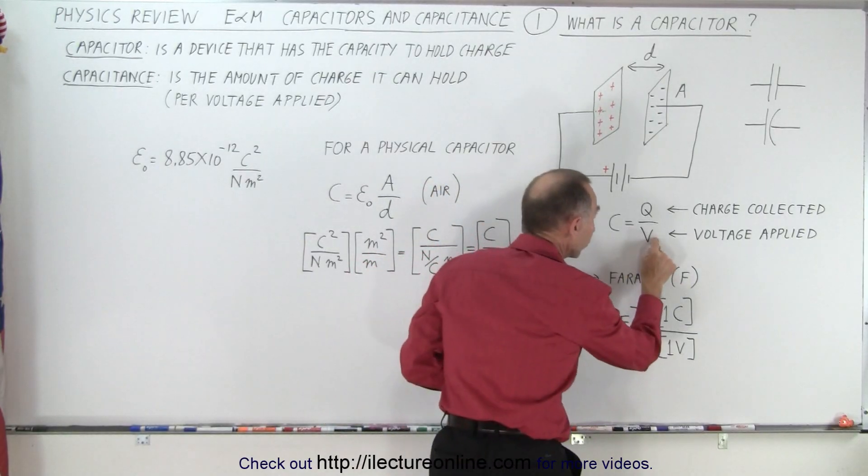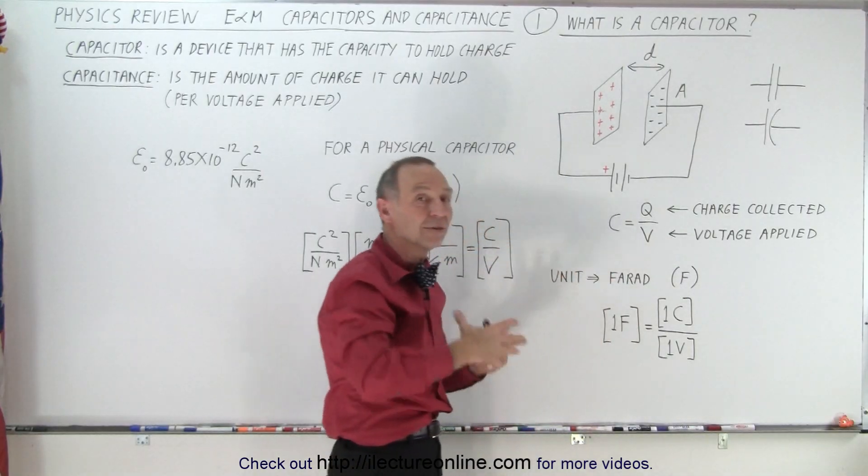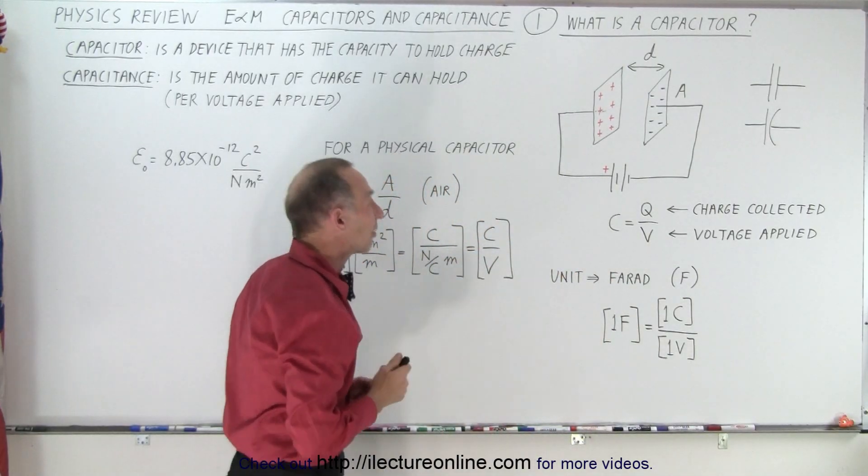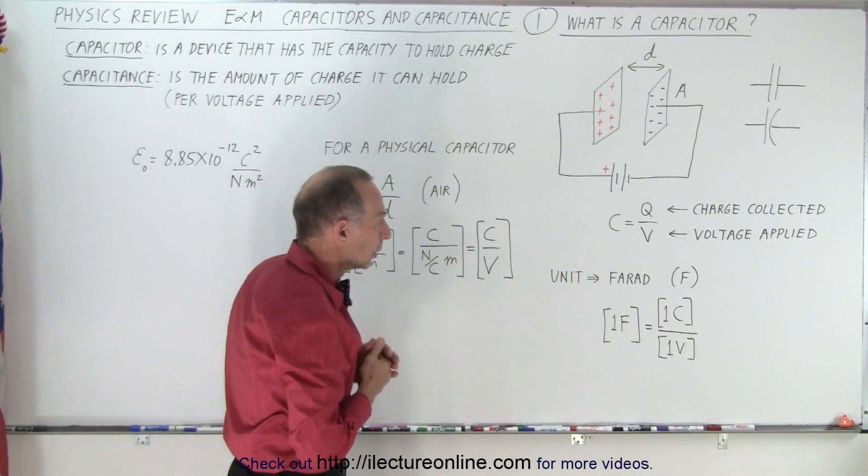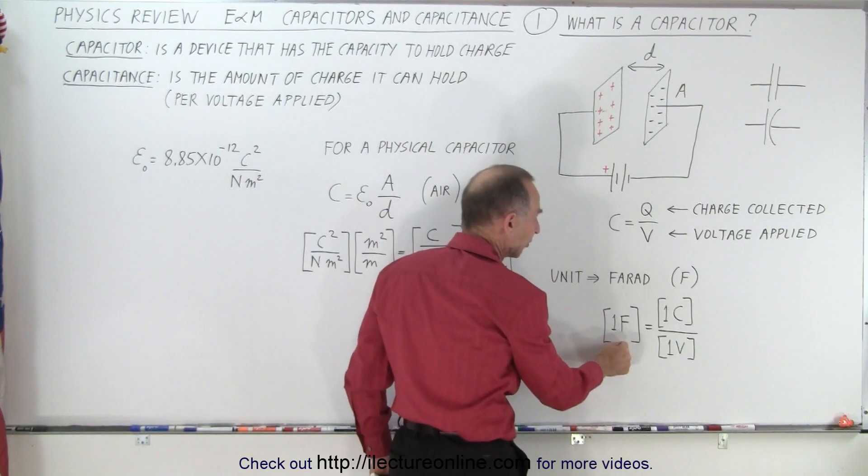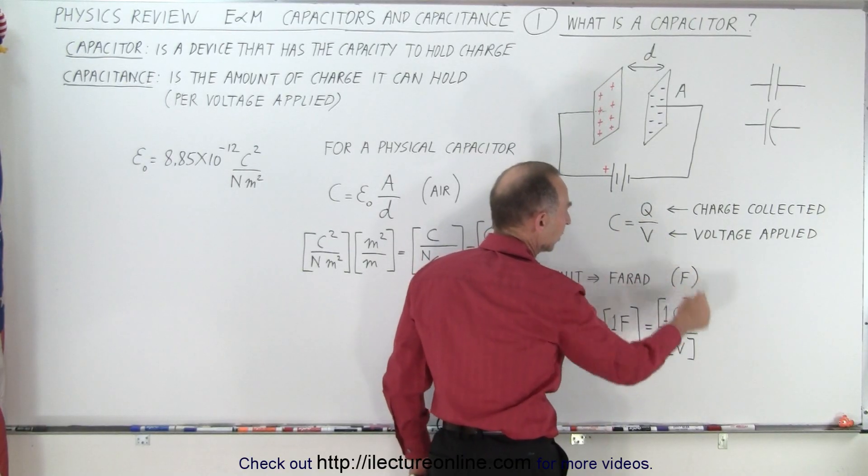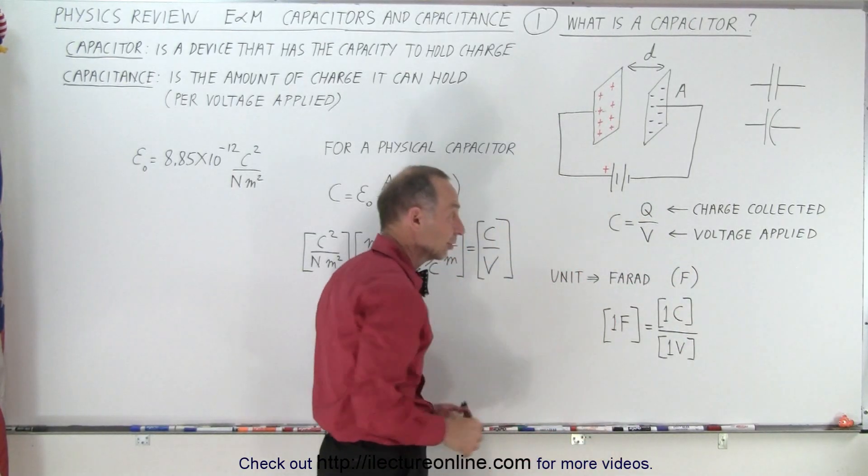But if just a small amount of voltage puts a lot of charge on the capacitor then the capacitor has a lot of capacitance to put charge on there. The unit that we use is called the Farad. We use the letter F for that and the Farad is defined as a coulomb per volt. That makes sense because charge is in coulombs and volt is in voltage or volts is in voltage.